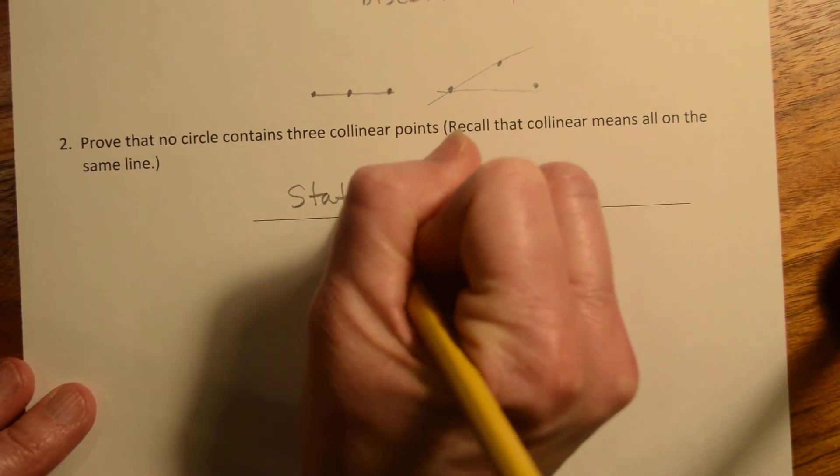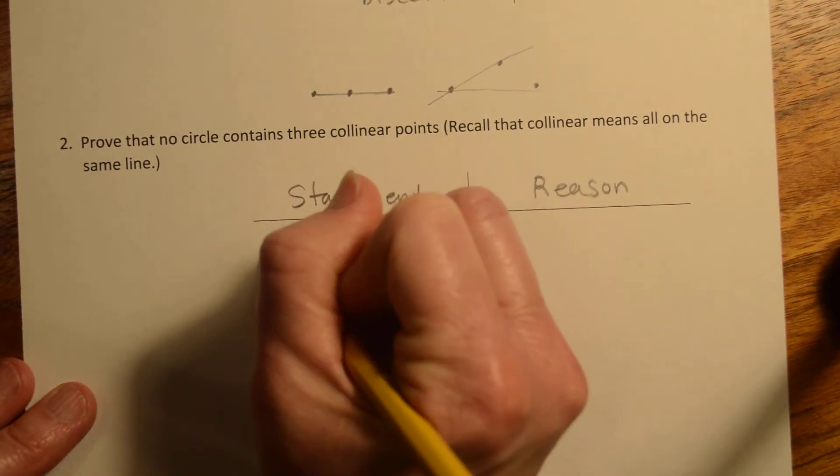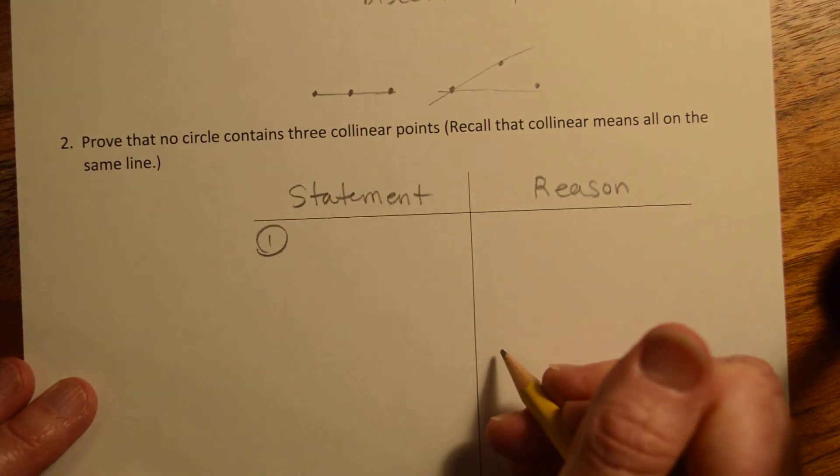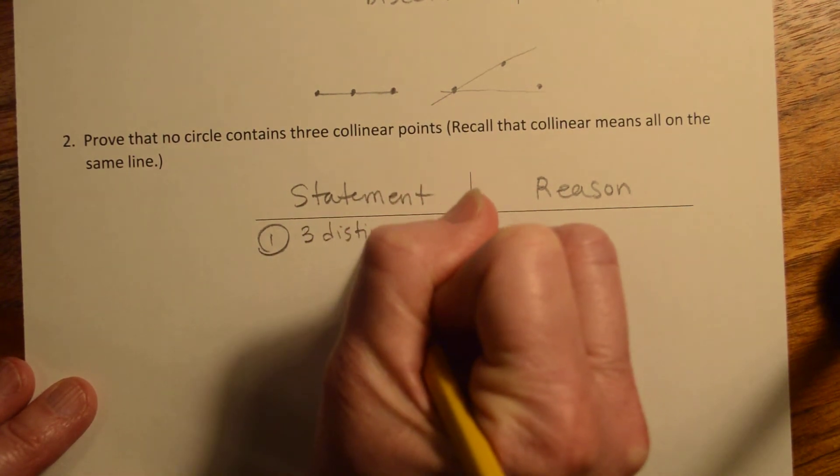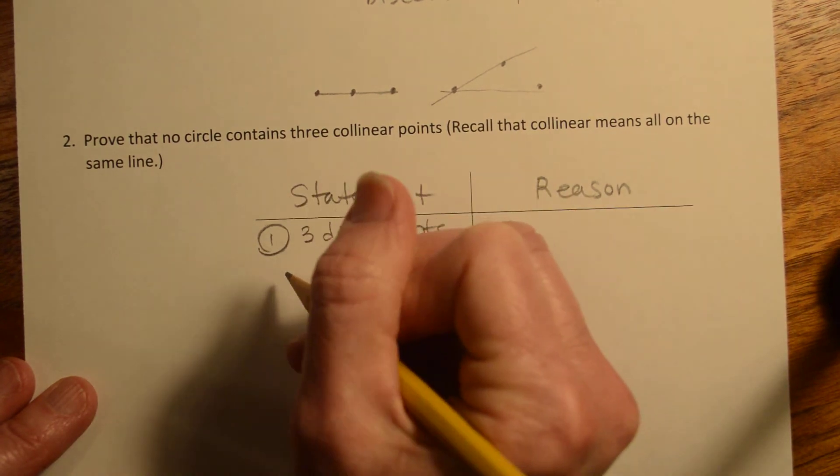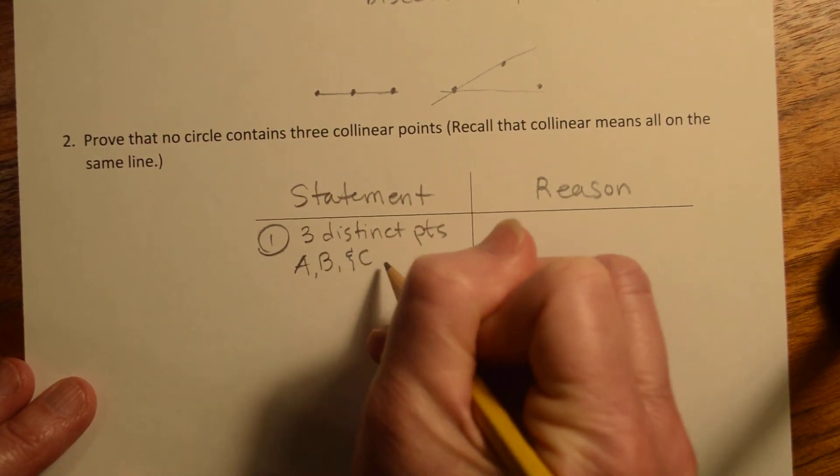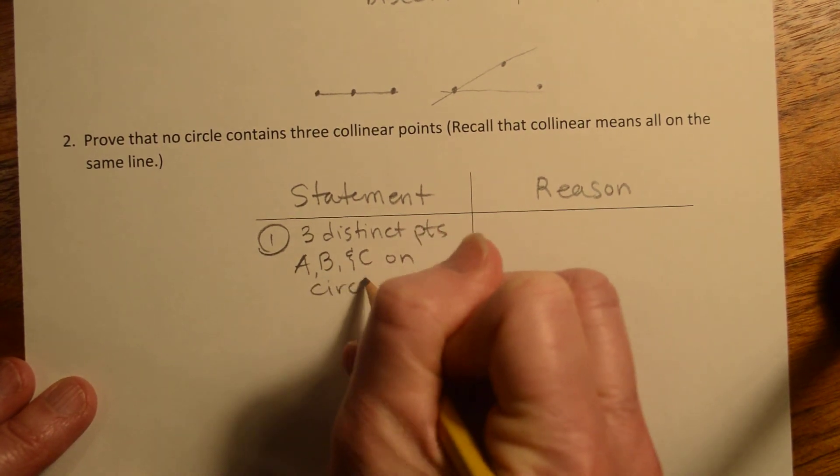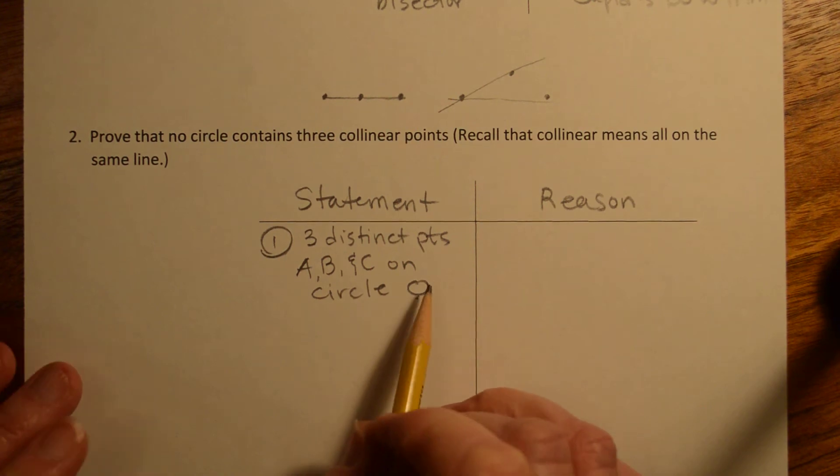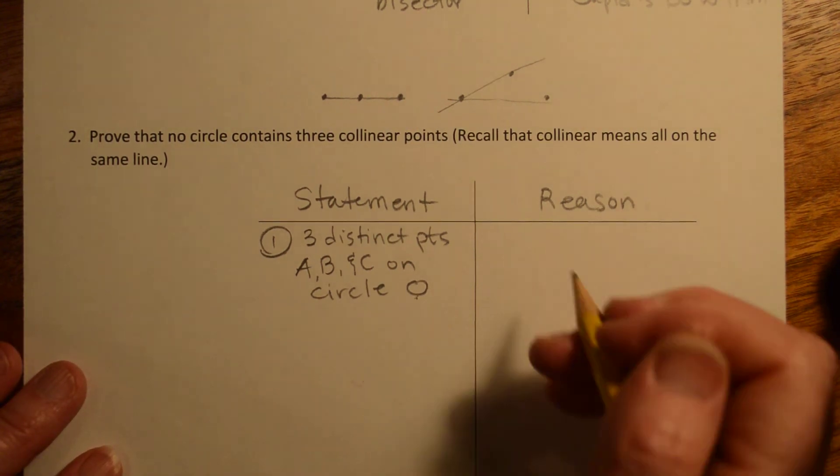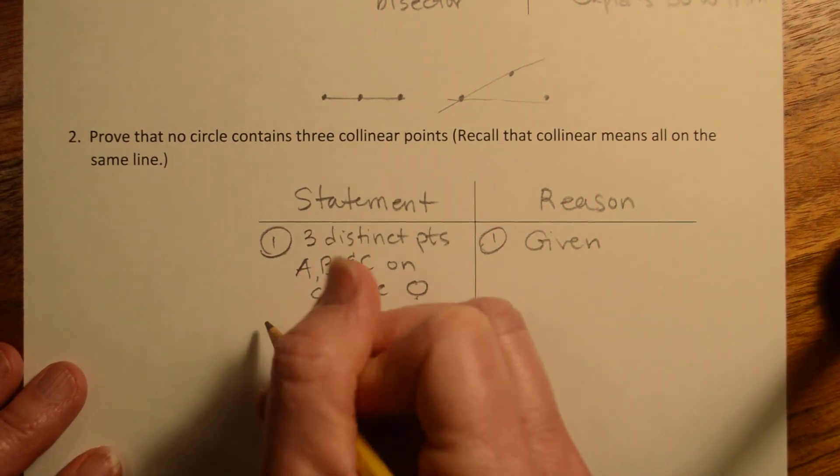All right, so our statement and our reason and our given is going to be, we have three distinct points A, B, and C on circle O. And again, generally they call a circle by its center and most times they call it O, so you'll see a lot of circle Os. Reason, given.